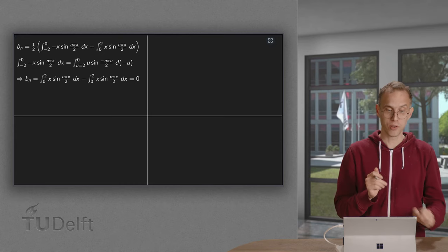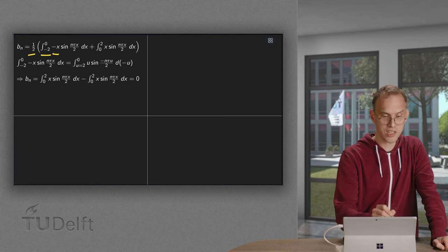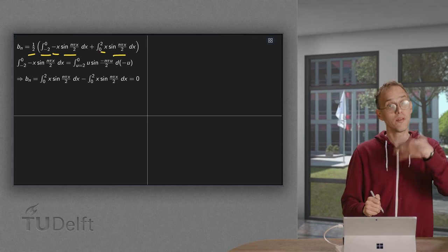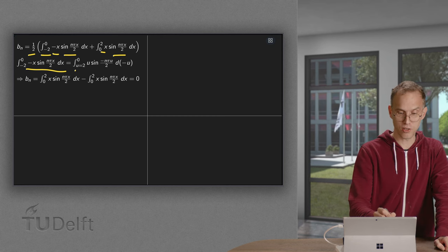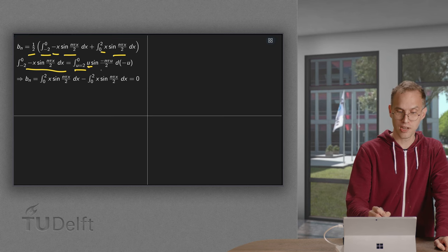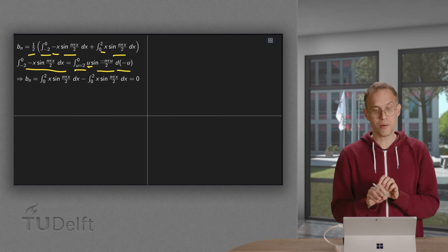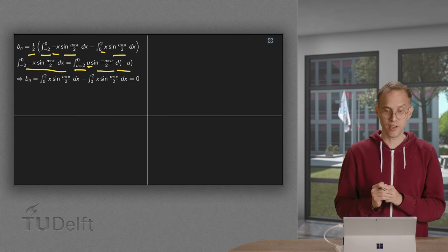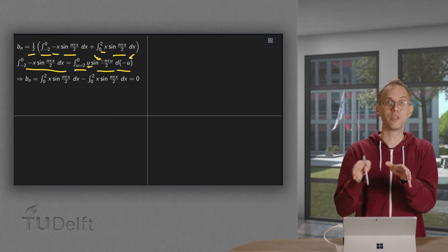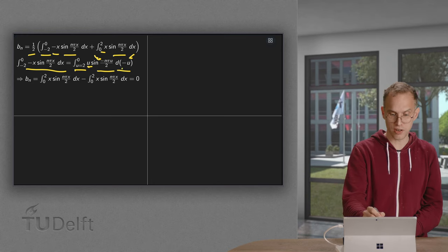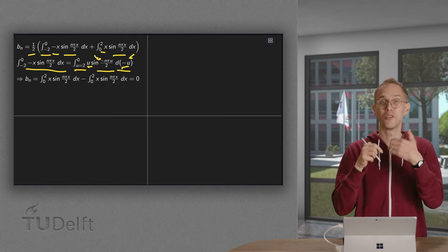Now we have the an, onto the bn. Same trick. The 1 half, integrate from minus 2 to 0, here we have a minus x times the sine, and plus x times the sine. And again we can use the substitution rule. Setting u equals minus x, u runs from 2 to 0 then. The minus x becomes a u, sine becomes minus n pi over 2, and we get a d minus u. But now we are left with two minus signs. The sine of minus something equals minus the sine, compensates the minus here. So if we invert the order of integration, we get the first integral equals minus the second integral.